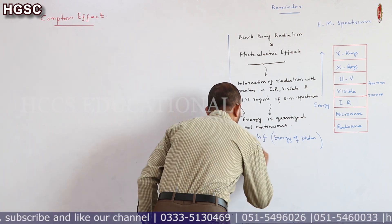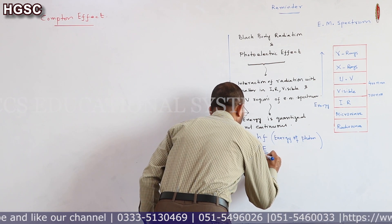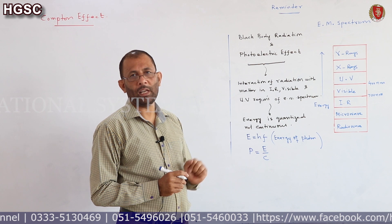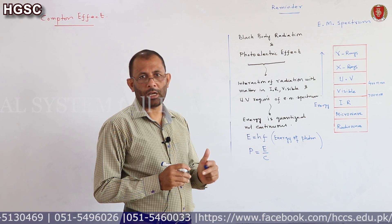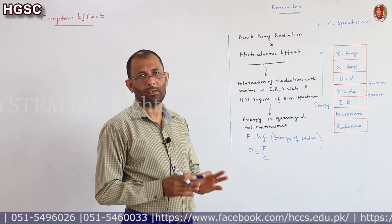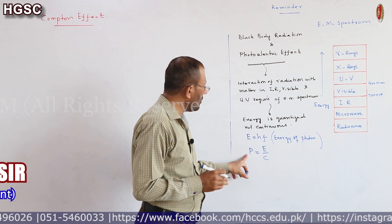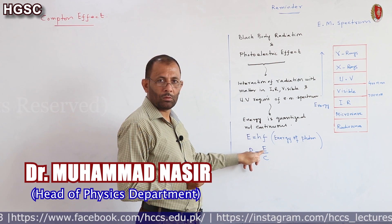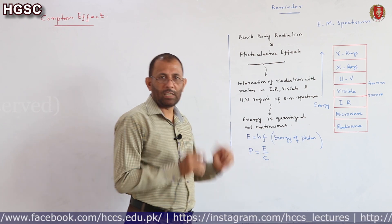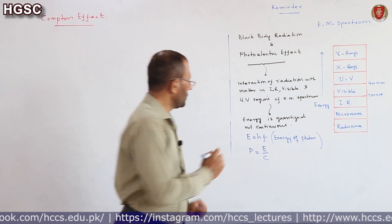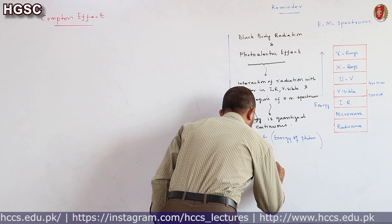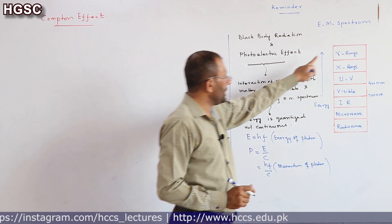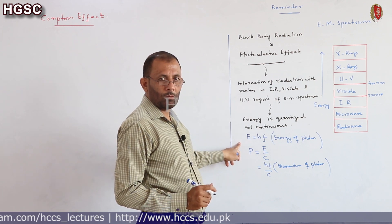Now, according to electromagnetic theory, the momentum of these radiations is p = E/c, where E is the energy of radiation and c is the speed of light, equal to 3 × 10⁸ m/s in free space. This is the momentum imparted by electromagnetic radiation. Substituting E = hf gives us the momentum of one photon: p = hf/c.